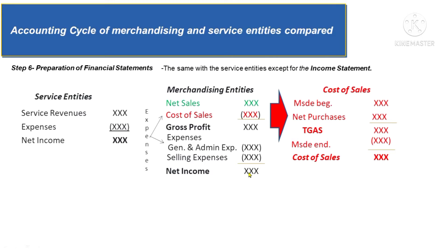Less withdrawals and less any net loss gives the ending capital. In the balance sheet, specifically in the asset section, a merchandise inventory account is included as part of the current assets. As for cash flows, the cash flow statement for merchandise entities follows the same concepts as service entities.